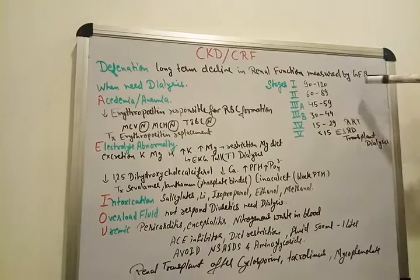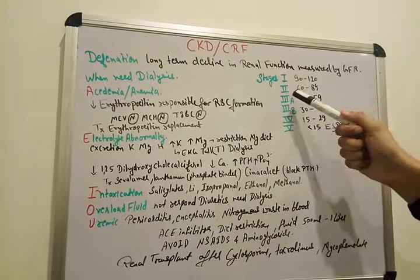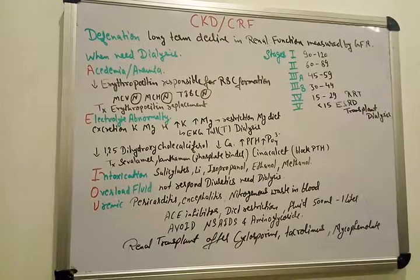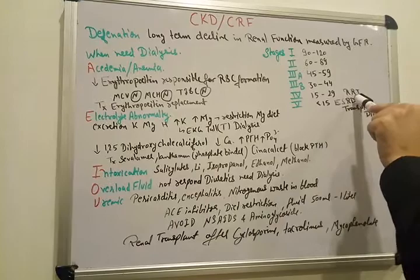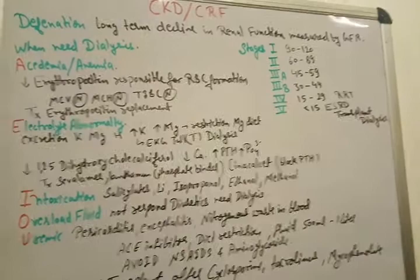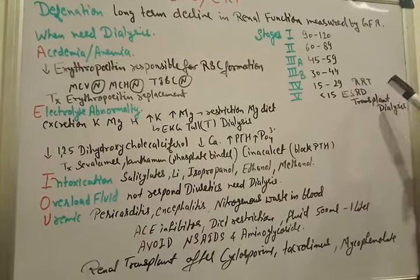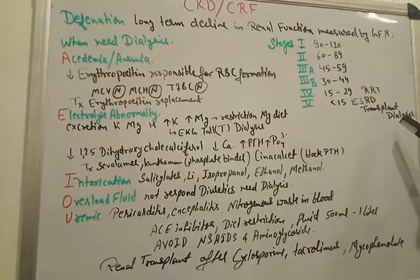In first stage 90 to 120 GFR, in second stage 60 to 89, in 3A its 45 to 59, 3B its 30 to 44 and 4th is 15 to 29. When the GFR is between 15 and 29, we need to go for RRT, renal replacement therapy. But in case of 5th, when GFR is less than 15, we do not have any choice, there is end stage renal disease ESRD. And we need to go for transplantation or we have a choice of dialysis.